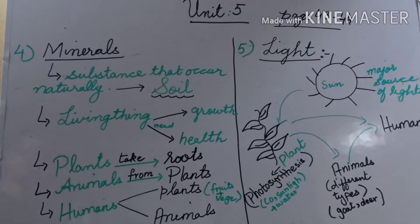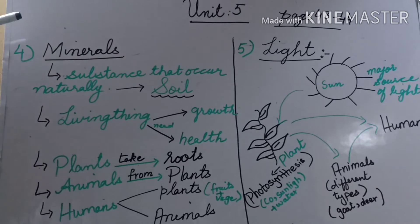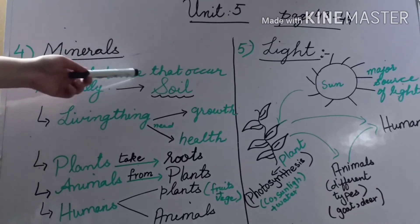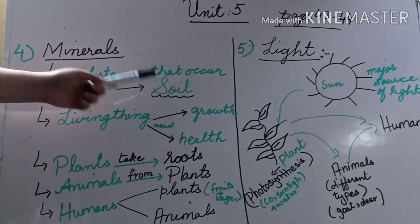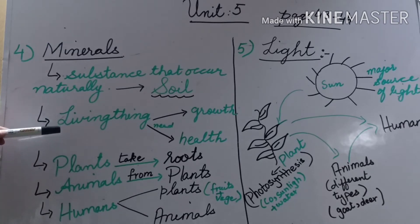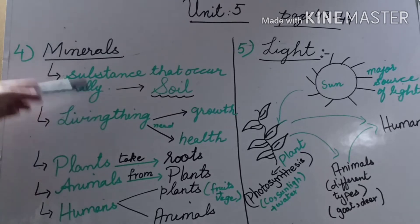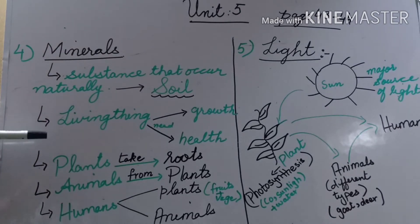Now we are going to talk about the next component of the environment. Our unit is on page numbers 42-44. When we talk about minerals, minerals are basically substances that occur naturally. They are not found from animals or plants — they are the dead remains present in the soil. Minerals are basically found in the soil. Living things — plants, animals, and humans — need minerals for two things: for growth and for health.